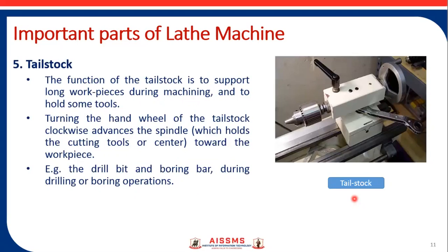The next important part is the tailstock, which is present at the right-hand side of the machine and is manufactured with the help of casting. The main function of the tailstock is to support the workpiece when its length is very long. The second important function is to determine the center of the workpiece. The tailstock also plays an important role in operations such as drilling and boring, and supports the drill bit and boring bar in those operations.